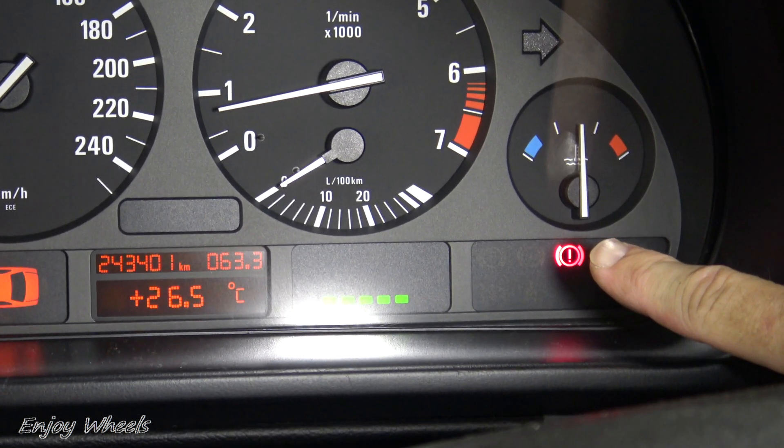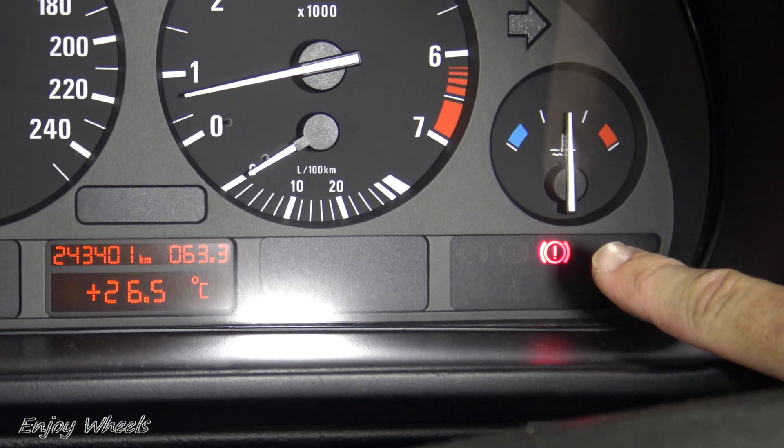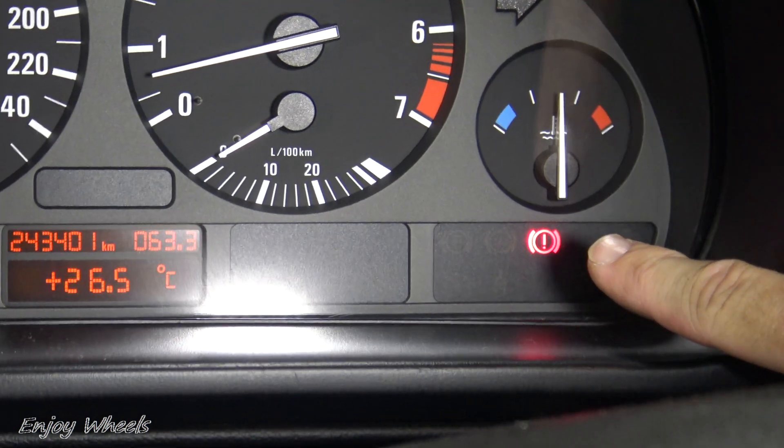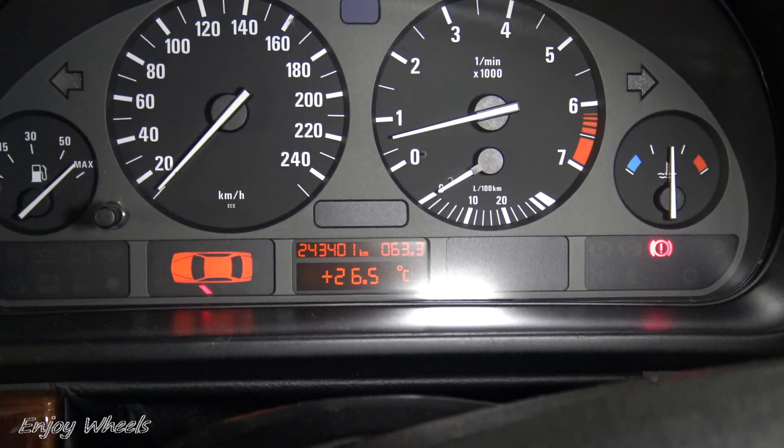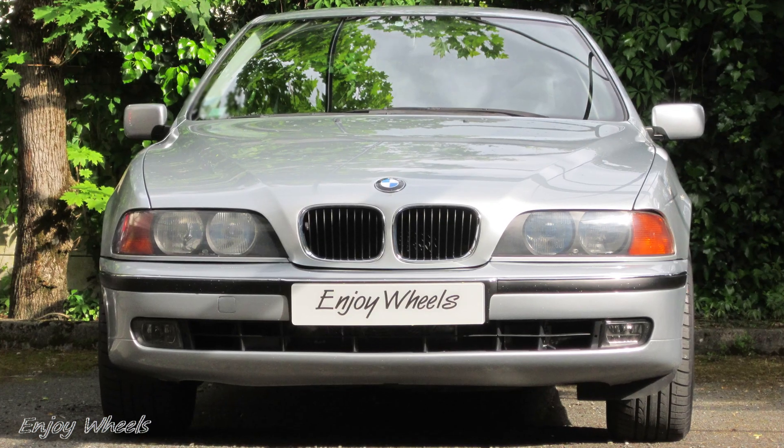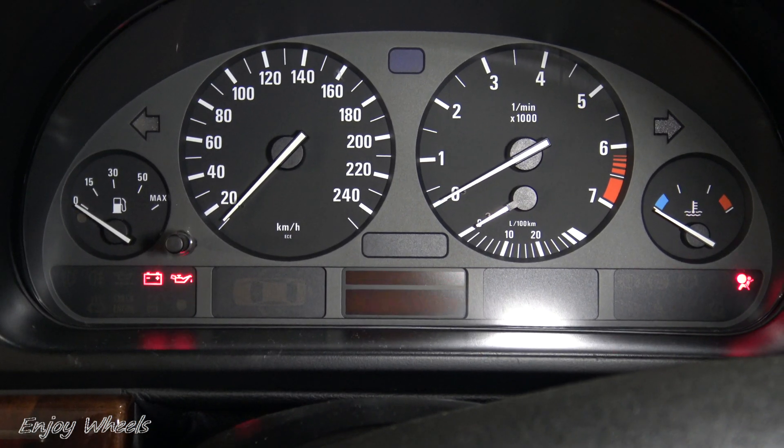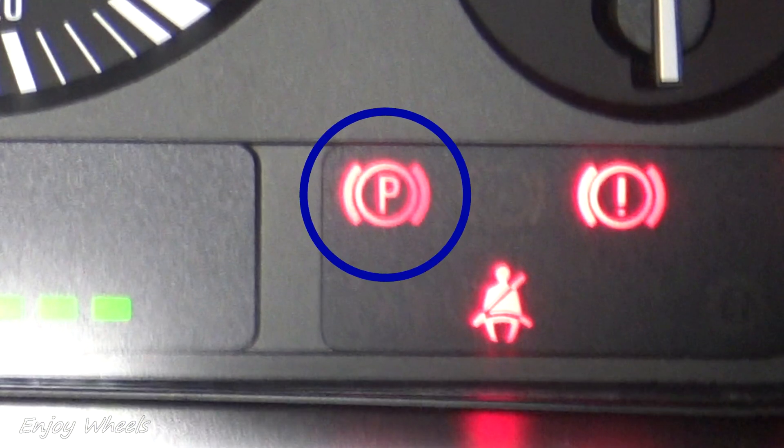Of course if the light stays on after starting up there is a problem somewhere. The first problem you think of is that the handbrake is not released. But on my car, a BMW 5 series E39, the handbrake has a specific indicator light with a big P inside, so the problem lies elsewhere.